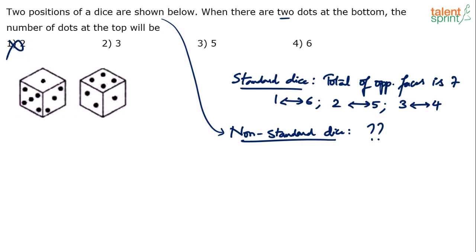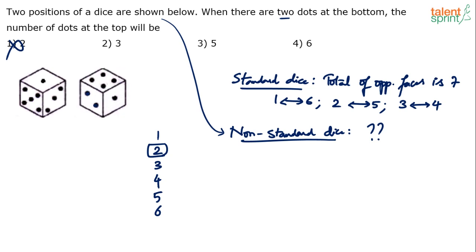The remaining options are three, five, and six. Now, looking at the two figures shown, in one position we see two dots on one face, and four is adjacent to it, and one is also adjacent to it. From the second figure, one is adjacent to two, and four is adjacent to two. If one is adjacent to two, it cannot be opposite to two. Similarly, four is adjacent to two, so four cannot be opposite. One and four are both eliminated.